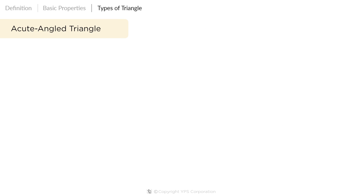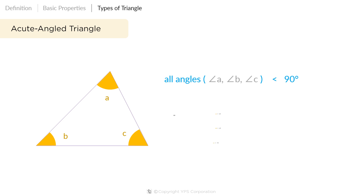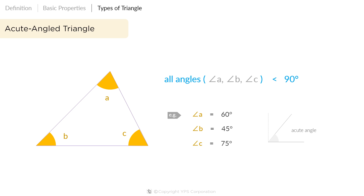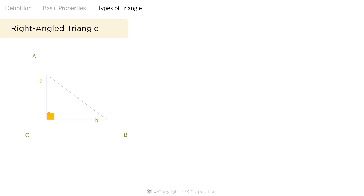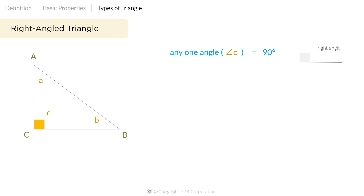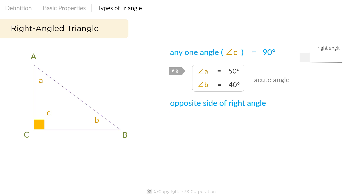Classification by internal angles. A triangle that has all three angles less than 90 degrees is an acute angle triangle. Thus, all the angles of an acute angle triangle are called acute angles. A triangle that has one angle that measures exactly 90 degrees is a right angle triangle. The other two angles of a right angle triangle are acute angles, and the side opposite to the right angle is the largest side of the triangle, called the hypotenuse.